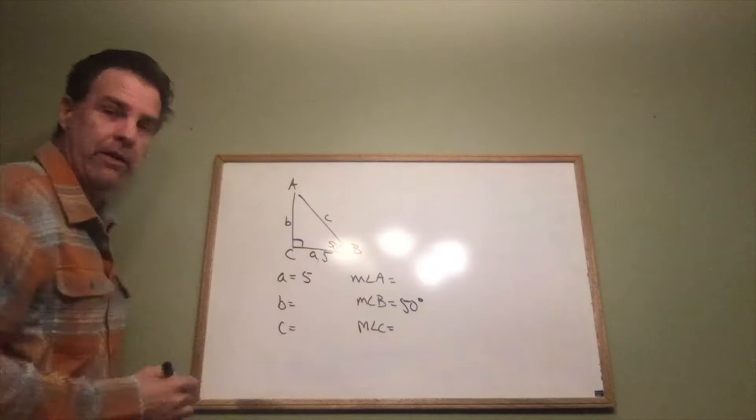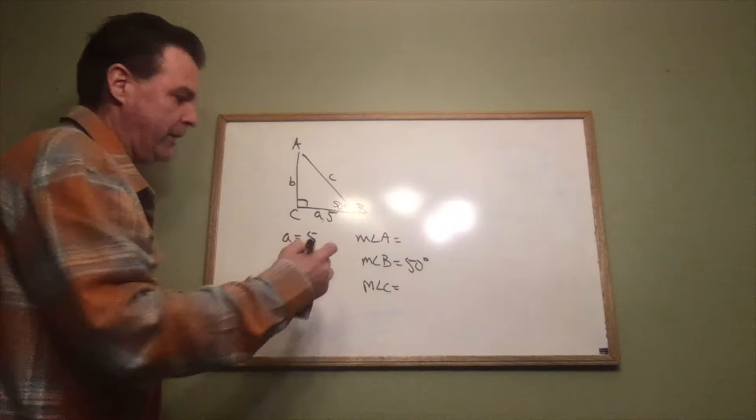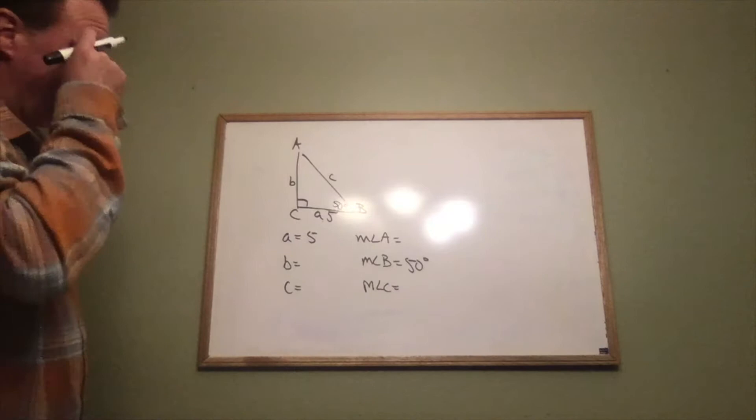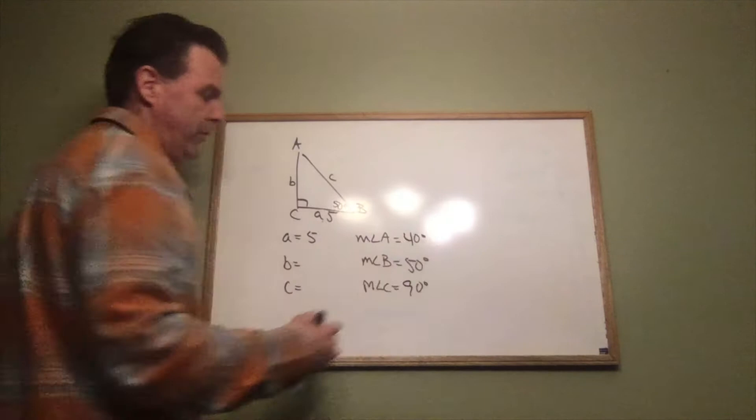Looking at what we have, angle C is already 90 degrees because it's the right angle. Since all three angles must add up to 180, we can subtract: 180 minus 90 minus 50 gives us angle A equal to 40 degrees. So we now have all three angles.